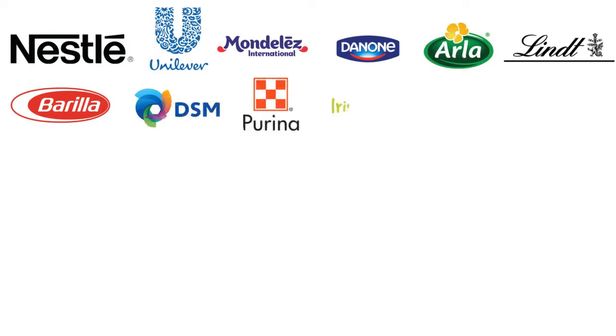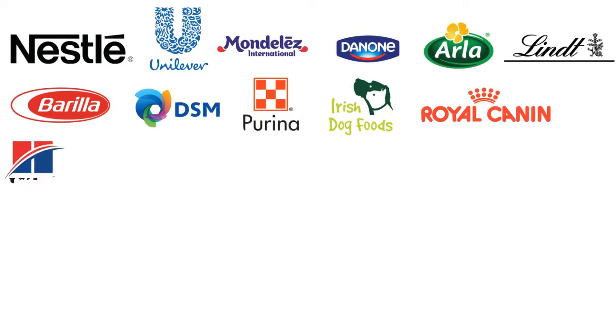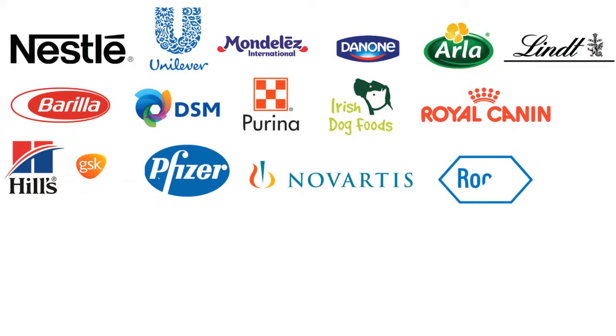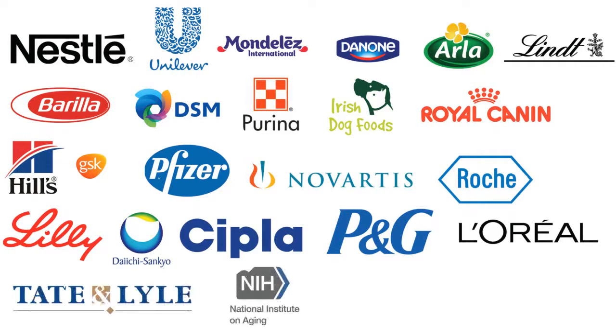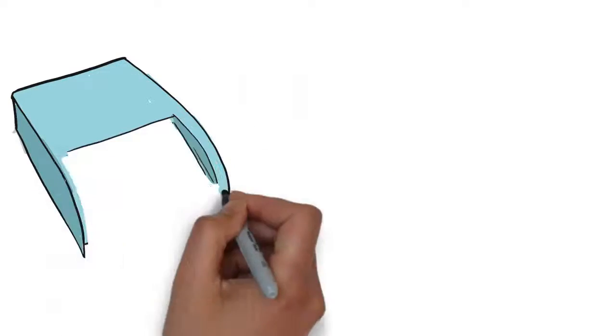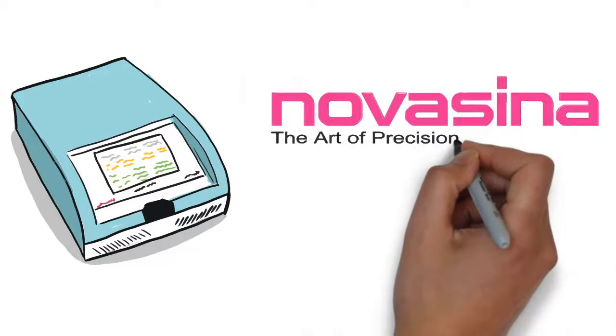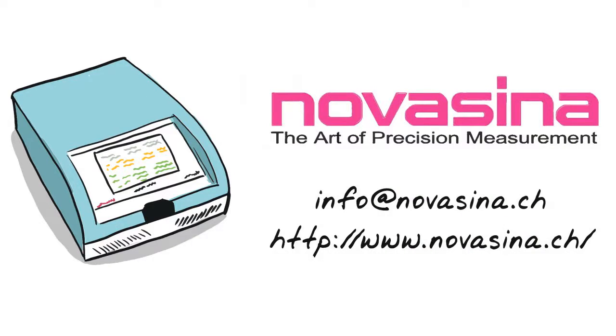Novasina Water Activity Meters are widely used in various industries such as food, pharma, personal care and government agencies to help in prolonging the shelf life and to avoid unwanted chemical or physical changes to their products. For more information and to purchase your Novasina Water Activity Meter, contact us today.